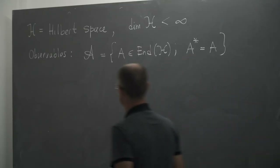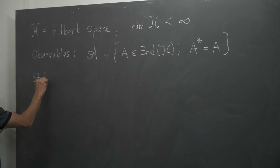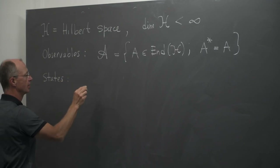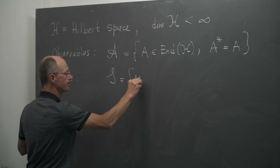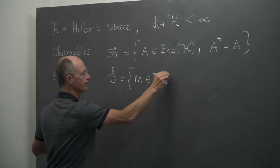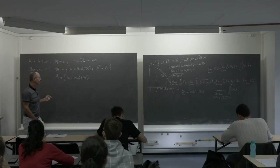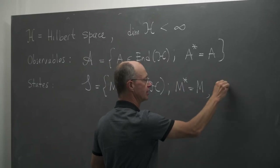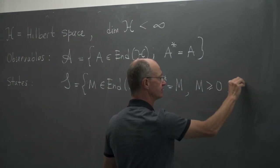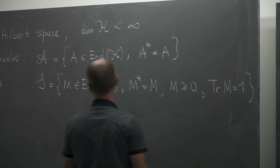We also introduced the space of states, S. These are also endomorphisms of H, but here there are many more conditions: they are self-adjoint, they are non-negative, and they have trace 1.